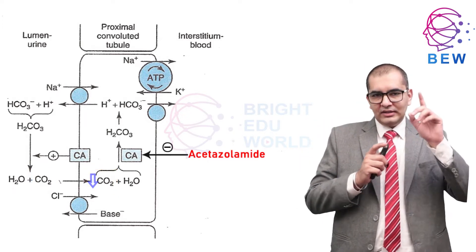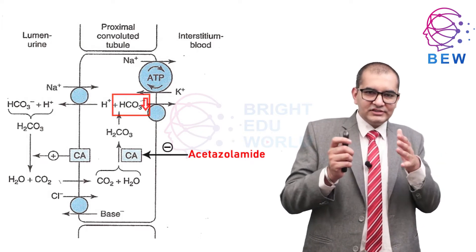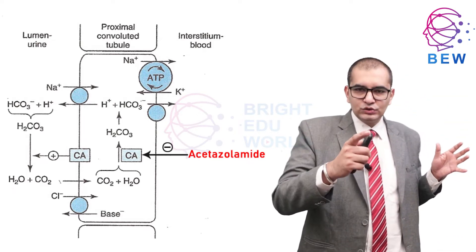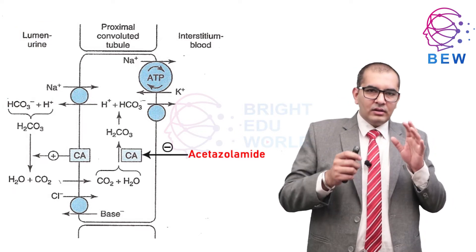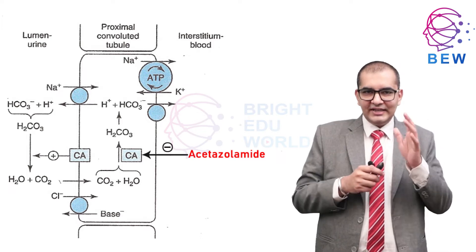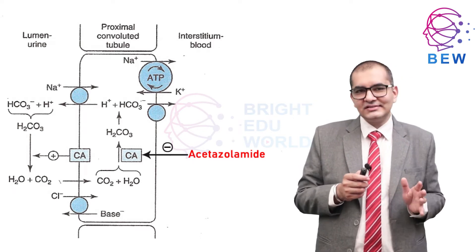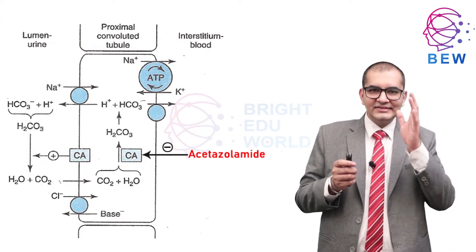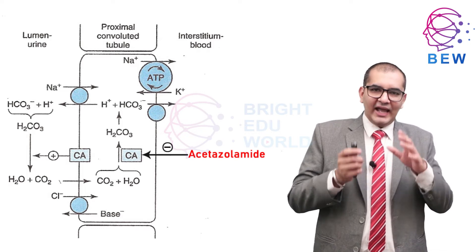The net effect is inhibition of HCO3 minus reabsorption into the proximal tubule, which leads to a prompt but mild alkaline diuresis. When carbonic anhydrase inhibitors are given, the distal Na+ exchange takes place only with K+, which is lost in excess. For the same degree of natriuresis, carbonic anhydrase inhibitors cause the most marked caluresis compared with other diuretics.